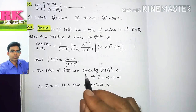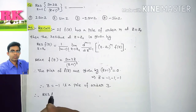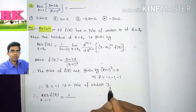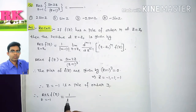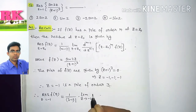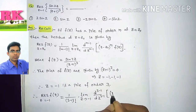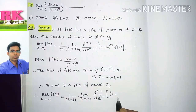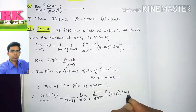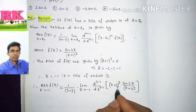We now find the residue of F(Z) at Z = −1. Substituting M = 3 into the formula, we get (1/(3−1)!) × lim[Z→−1] of the second derivative of (Z+1)³ · F(Z). Since F(Z) = sin(2Z)/(Z+1)³, the (Z+1)³ terms cancel, leaving (1/2!) × lim[Z→−1] of the second derivative of sin(2Z).